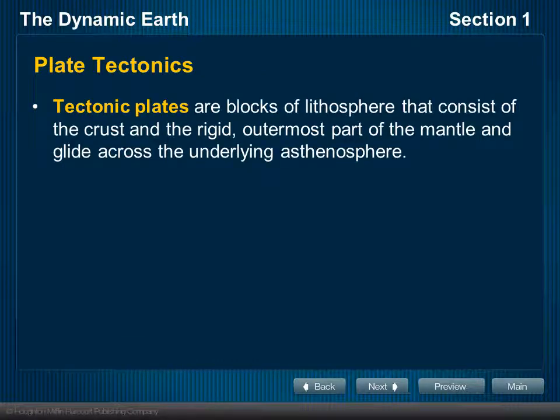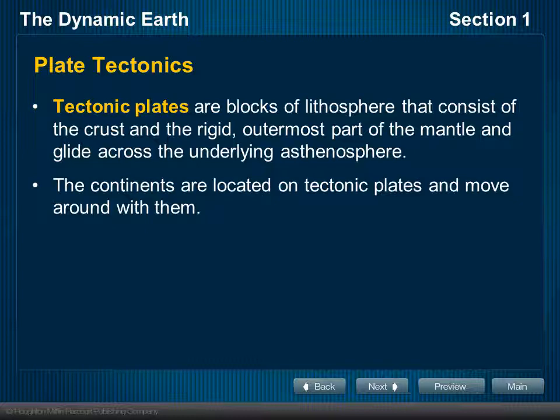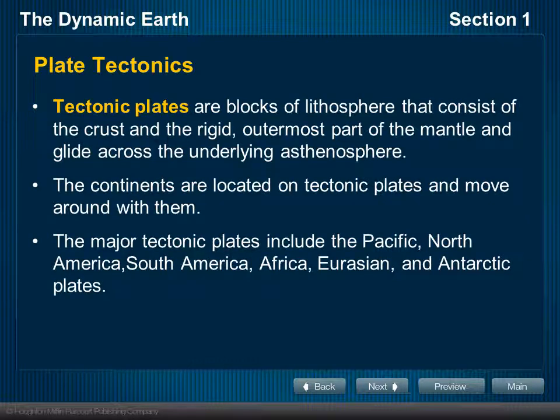Plate tectonics is something you've already heard a little bit about. The tectonic plates are the blocks of lithosphere that consist of the crust and the rigid outermost part of the mantle. They glide across the underlying asthenosphere — we can describe that almost as if they're floating on that layer. The continents sit on top of the tectonic plates and move around with them as the tectonic plates move. The major tectonic plates are named for the parts of the Earth on top of them: the Pacific, North American, South American, African, Eurasian, and Antarctic plates.